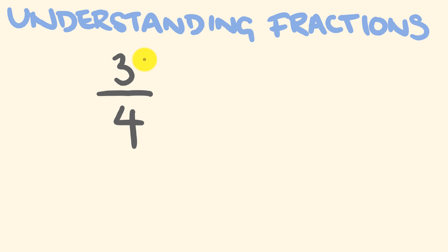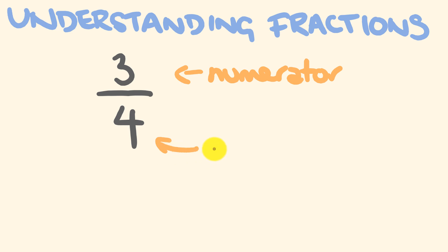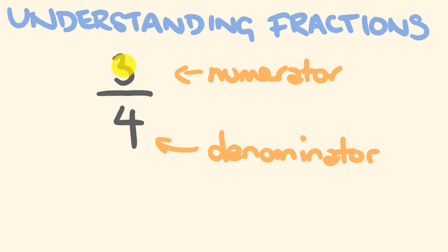First off, we have the number up the top. The top number is called the numerator — so this is called the numerator. The bottom number is called the denominator. You'll quite often hear people refer to the lowest common denominator and things like this. We often just think of these as top number and bottom number, but they are the numerator and the denominator.